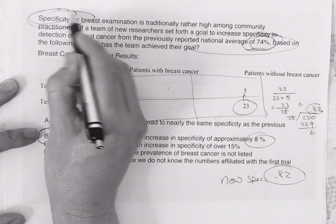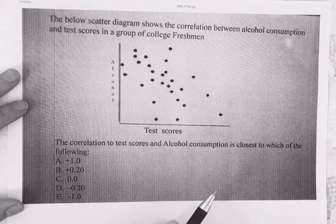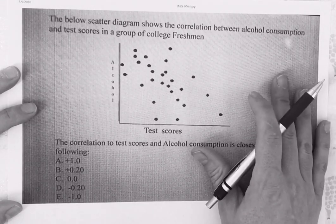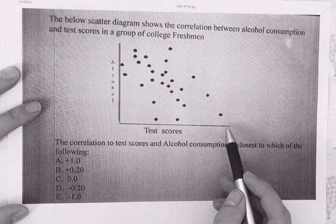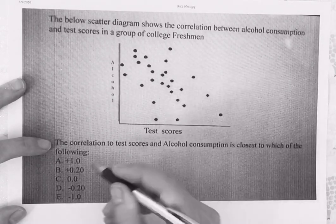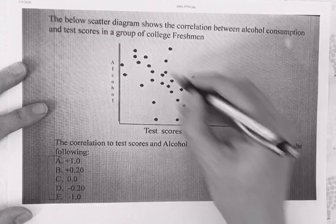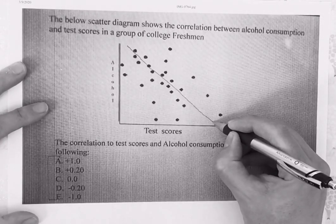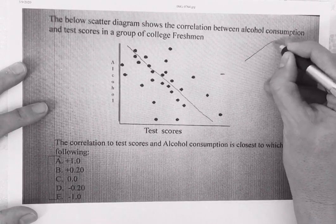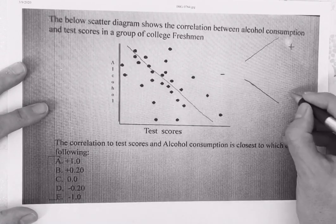Just remember: whether it's sensitivity, specificity, PPV, or negative predictive value, it's all right there in the box. Problem 4 is a review of scatter plots and correlation coefficients. We're looking at the correlation between two test scores. You want to draw a line matching where the data trends. This scatter plot clearly trends downward, meaning the correlation is in the negative direction — just like basic math: upward trend is positive, downward is negative.